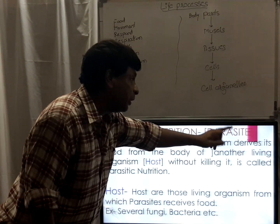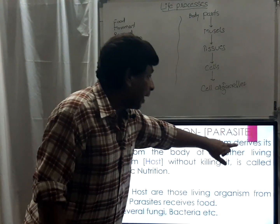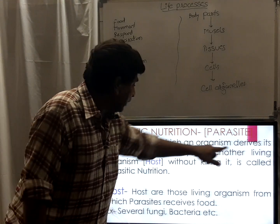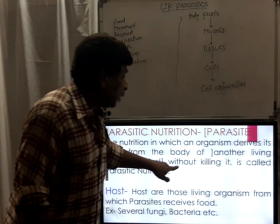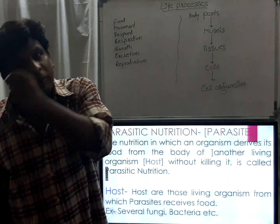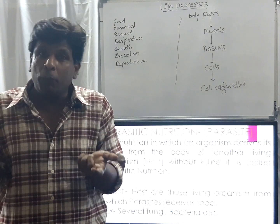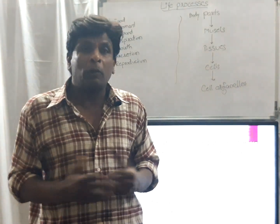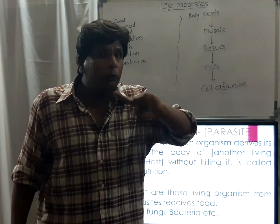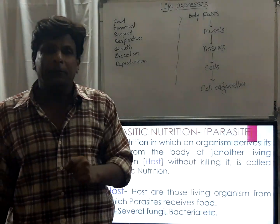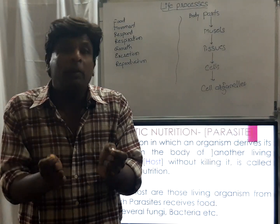Now you will understand the definition better. 'Derives its food' means takes from or depends on. The nutrition in which an organism derives its food from the body of another living organism — that organism is called the host — without killing it. When it depends on a living organism it will not kill that host, because if it kills the host, it is impossible for the parasitic organism to depend on that body, since they depend only on living organisms.